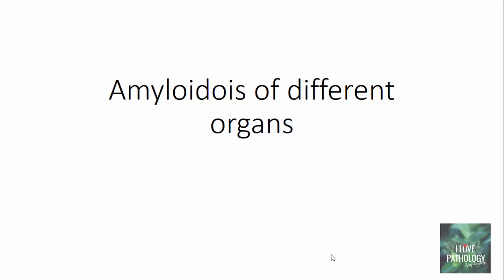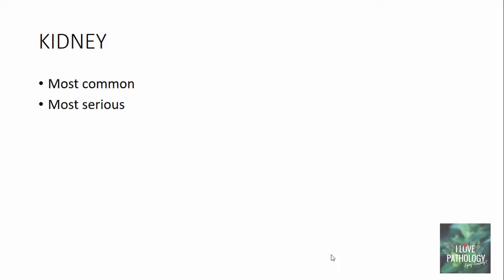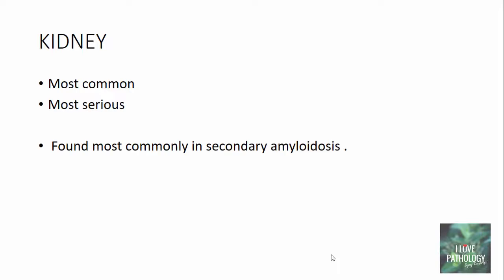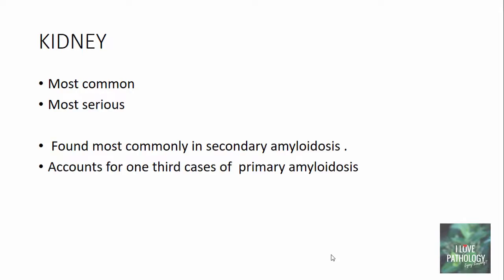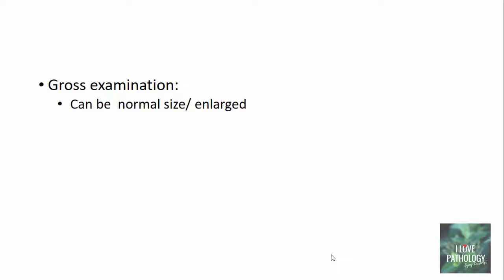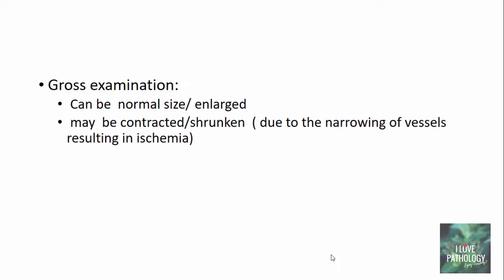Now let us discuss amyloidosis of individual organs, beginning with the kidney — the most commonly and most seriously involved organ. It is most commonly found in secondary amyloidosis and accounts for around one-third of cases of primary amyloidosis. Grossly, the kidneys can be of normal size or enlarged. In advanced stages they can be shrunken or contracted due to ischemia caused by narrowing of vessels. The cut surface is pale, waxy, and translucent in appearance.